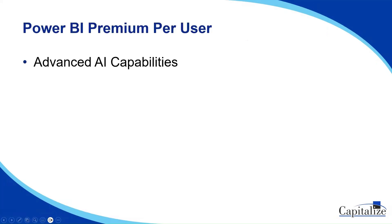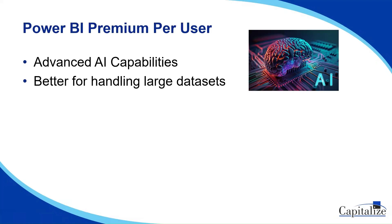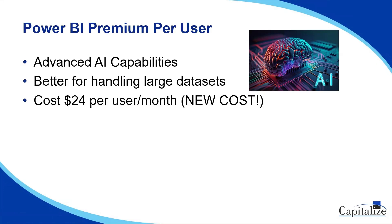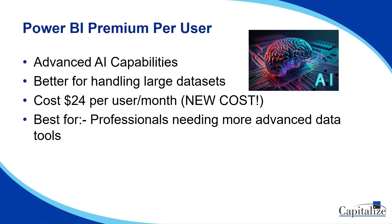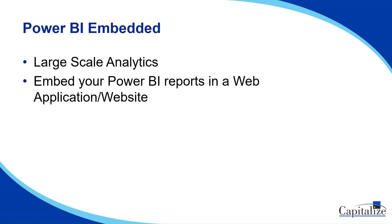Power BI Premium unlocks advanced capabilities like AI-powered analysis and handling larger datasets. Its cost is $24 per user per month, and it's best for professionals needing more advanced data tools. For small teams and subject matter experts, Power BI Pro might be great for collaboration, and Premium per user offers advanced analytics at a reasonable price. With Power BI Embedded, you can embed your Power BI reports in a web application or website, and the cost varies based on capacity.